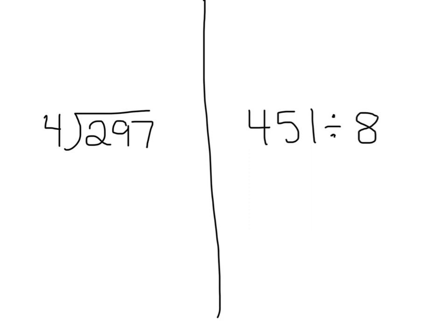Let's do another one. We have 297 divided by 4. I need to think of a compatible number. If I round 297 to 300, it's still going to be tougher to do in my head. Does 4 divide into 2? No. Does 4 divide into 29? Yes. So I need to think of a number close to 29 that 4 will divide into. 28 — 4 divides evenly into 28. So I'm going to change it to 280. That's my compatible number. Now I can use mental math: 28 divided by 4 is 7, and then I add the 0. 297 divided by 4 is about 70.